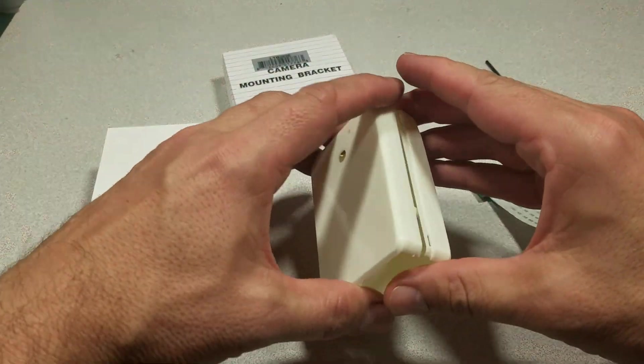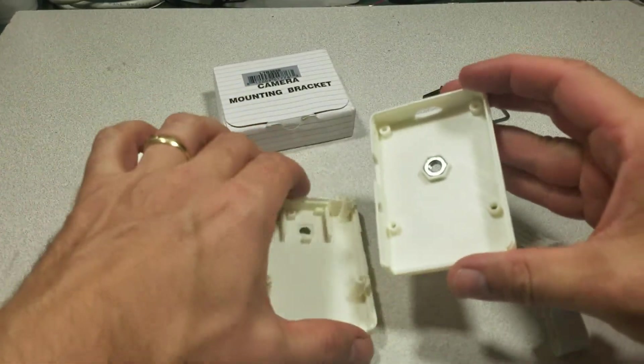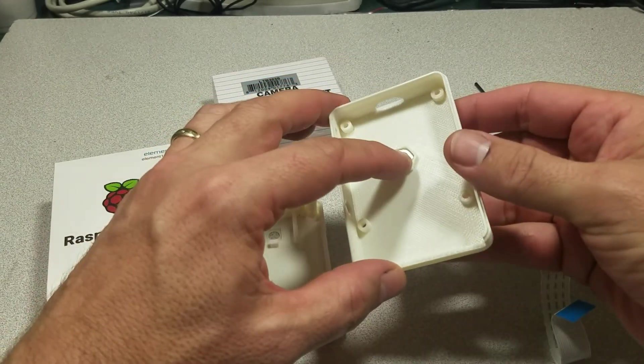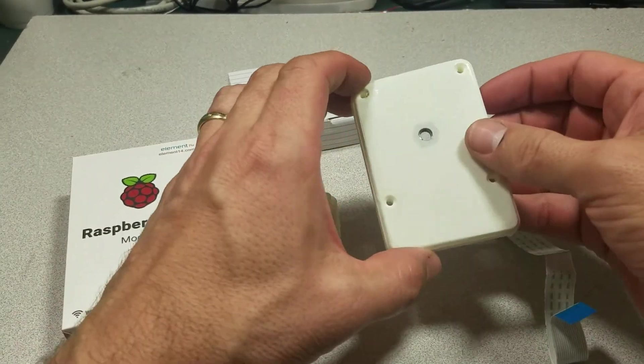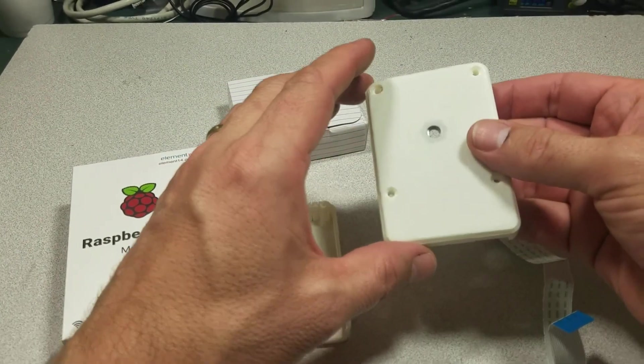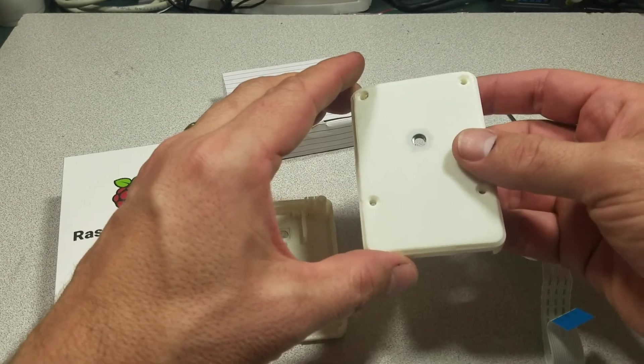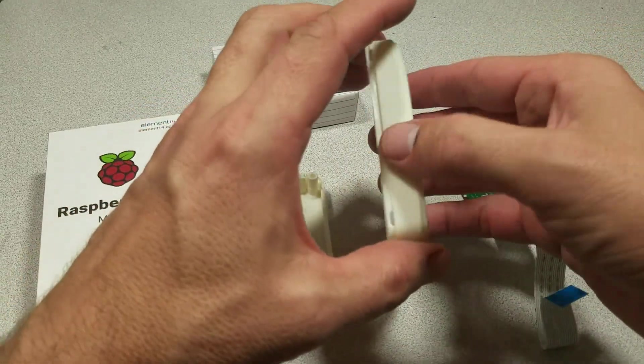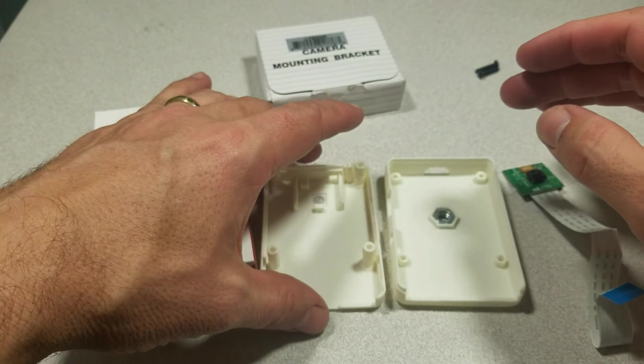This is 3D printed to order in one of many colors. As you can see it has a mounting nut, a metal mounting nut, for a standard quarter inch mounting bracket for most cameras.